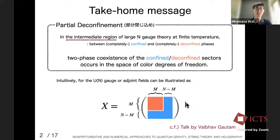Intuitively, we can imagine the following situation: if we consider a U(N) gauge theory with pure gauge or fundamental matter fields, the field configuration can be separated explicitly. Explaining this concept is the goal of my talk.